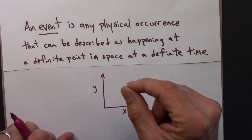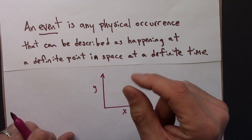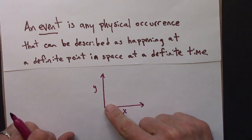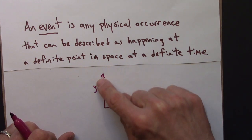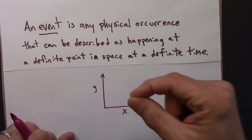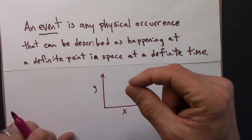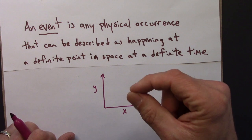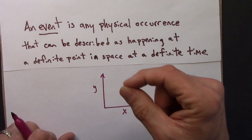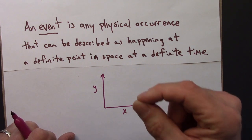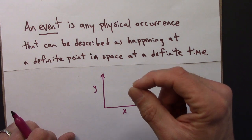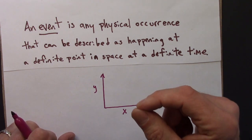So if we have an event that occurs in a particular location in space, how far in the x-direction, how far in the y-direction, how far in the z-direction up, we would describe its location by giving those three numbers, x, y, and z. And then we'll also need to give a time coordinate, a time value, for the time at which that event occurred.